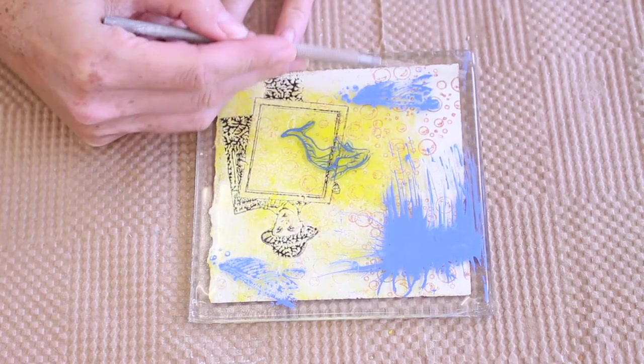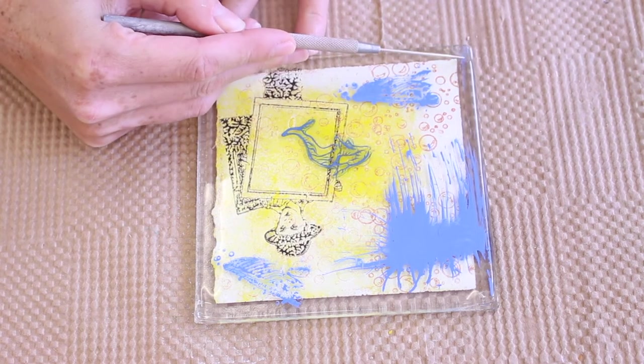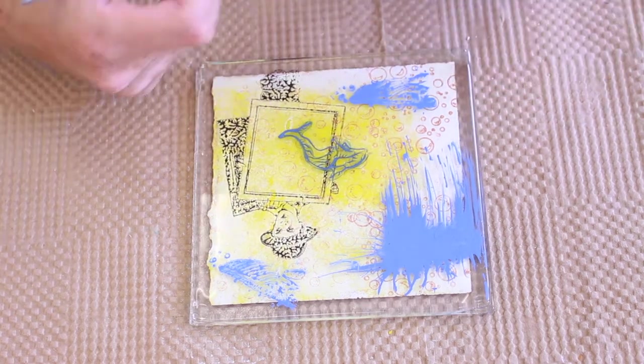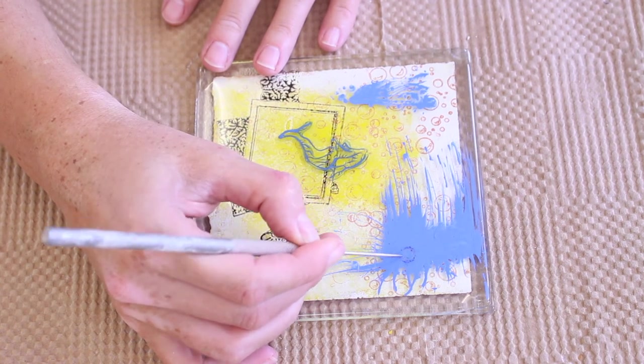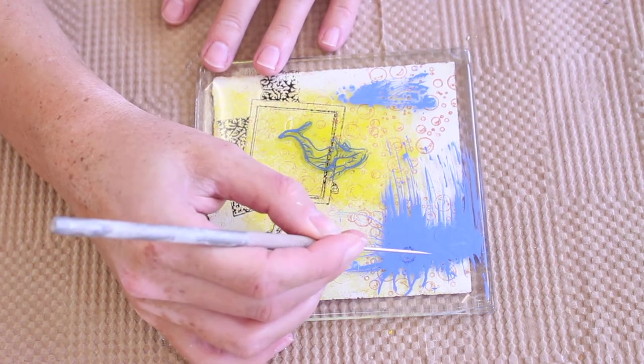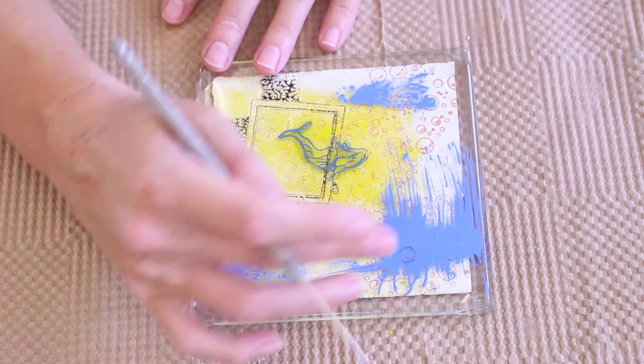Once the paint was dry, I came back with my needle tool and scratched away any little smudges that I didn't want around and also to clean up some of the little whales. I also scratched in some little eyes and a creepy face to my little splat there.